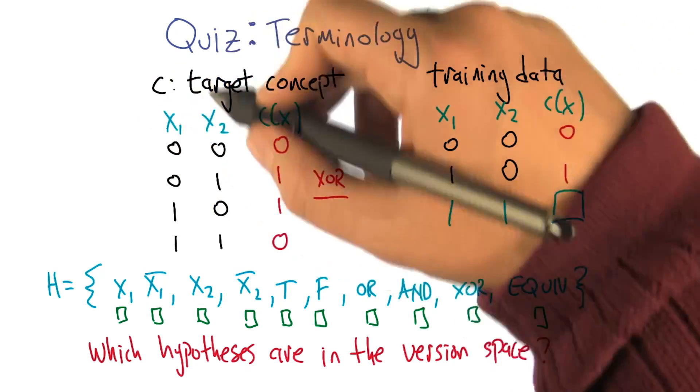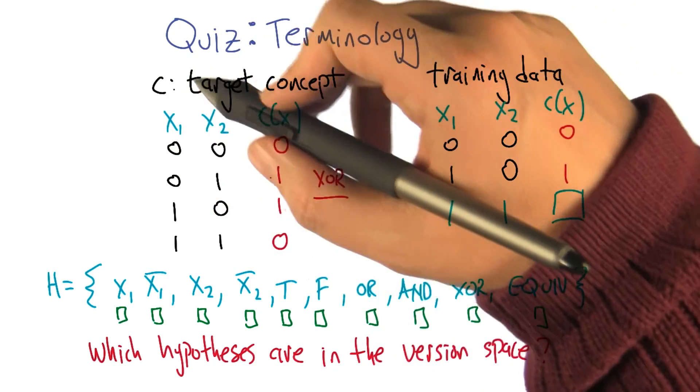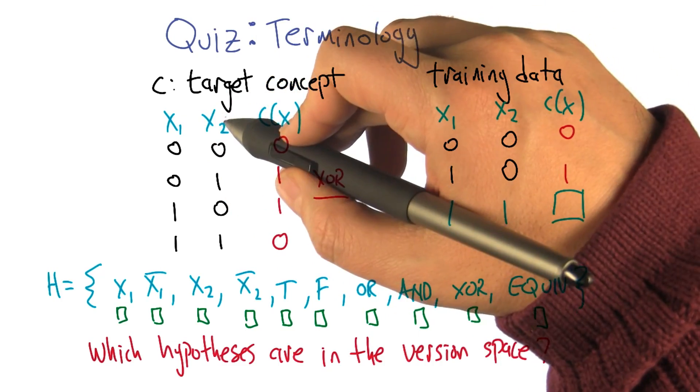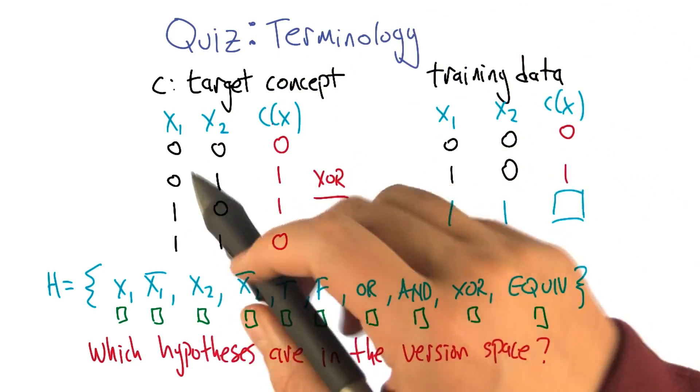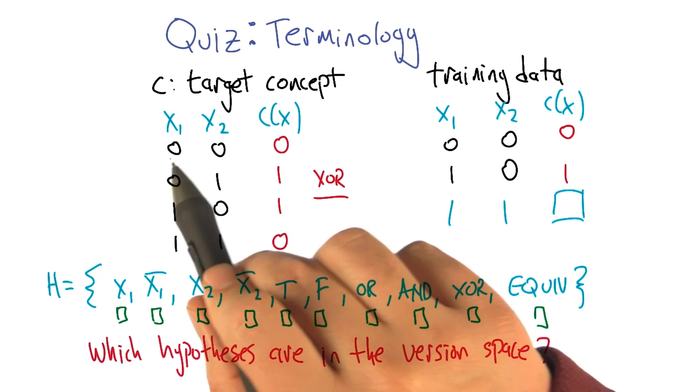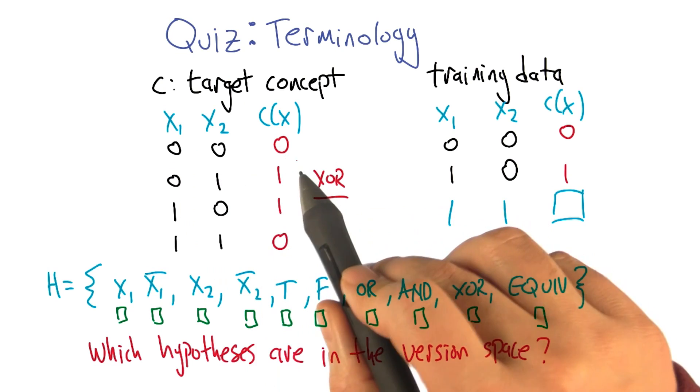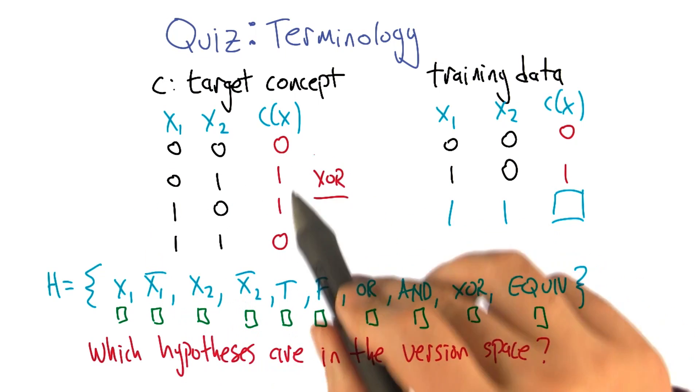So here we go. Here's the actual target concept, C. For all possible, it's a mapping from two input bits to an output bit. The two inputs, x1 and x2, can take on all four possible different values, and the outputs are 0, 1, 1, 0, which is to say the XOR function.